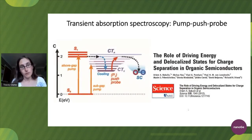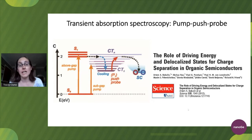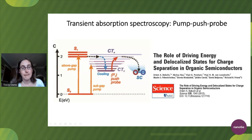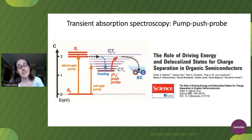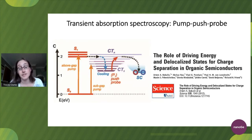A lot of people have been tweaking transient absorption in order to gain extra information. One very clever approach is pump-push-probe spectroscopy, which introduces a third beam — often a low-energy near-infrared or infrared beam — that essentially pushes the charge transfer state up its vibrational manifold, giving it a little extra energy to dissociate more efficiently. By comparing this with standard pump-probe, you're able to look at how many charge transfer states you have, which has been very valuable in assessing organic solar cells. The Science article by Artem Bakulin and Richard Friend is a great example of this.